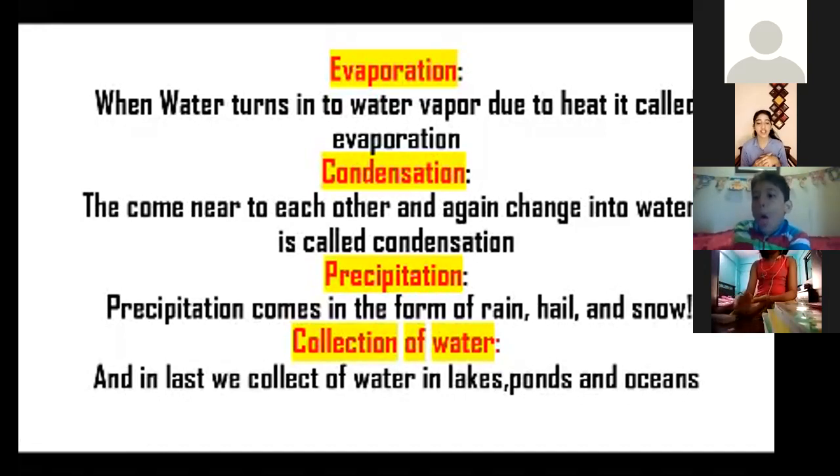Then precipitation: precipitation comes in the form of rain, hail, and snow. Collection of water: and in the last we collect water in lakes, ponds, and oceans.